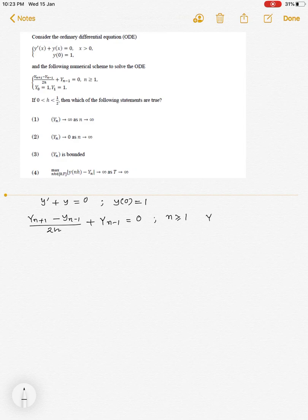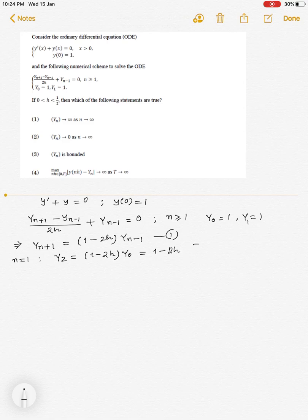When n greater or equals to 1 along with the condition y₀ = 1 and y₁ = 1. Now let us rewrite this numerical scheme as y_{n+1} = (1 - 2h)y_{n-1}. Now, if we put n = 1 in this numerical scheme, then we have y₂ = (1 - 2h)y₀ which is equal to 1 - 2h since y₀ = 1.